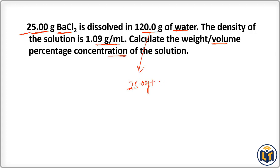The total mass of solution equals 25.00 grams (mass of BaCl₂, the solute) plus 120.0 grams (mass of water, the solvent). Adding these values gives us 145.0 grams as the total mass of the solution.